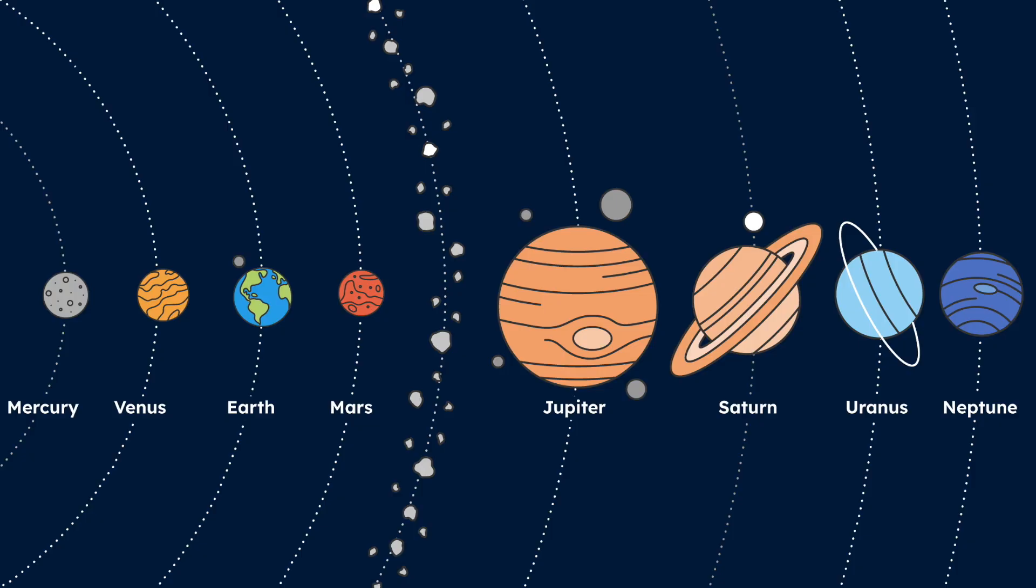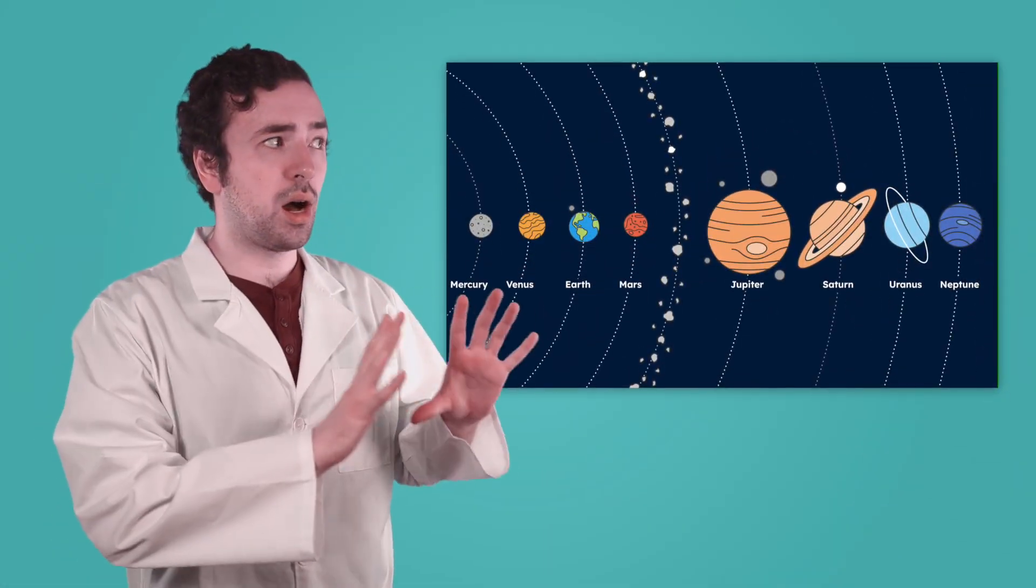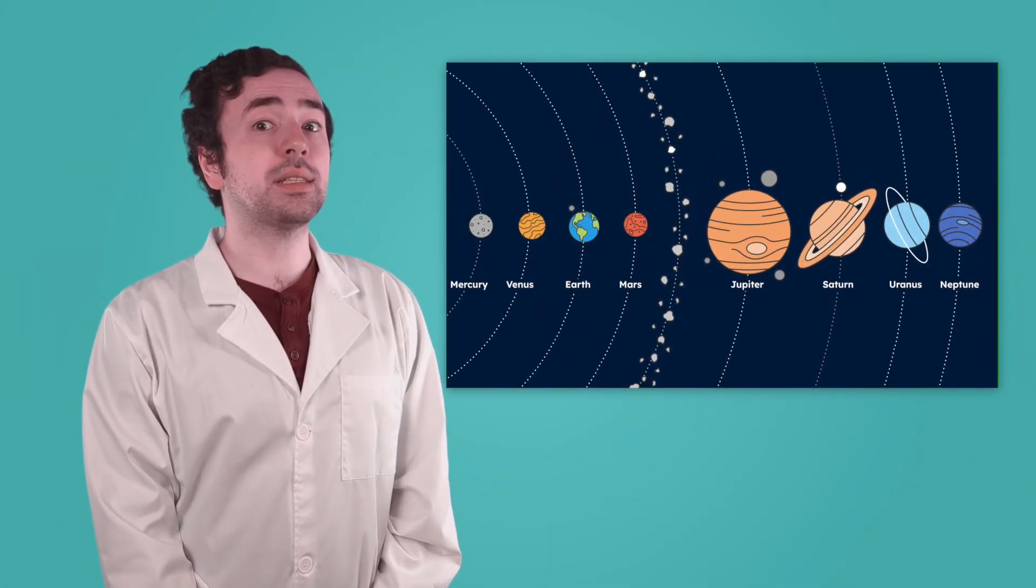In our last lesson, we explored the inner planets, the four rocky worlds closest to the Sun: Mercury, Venus, Earth, and Mars. Beyond the inner planets is a wide band of space rocks called the asteroid belt. It forms a boundary separating the inner planets from the rest of the solar system. Beyond the asteroid belt, things get big.